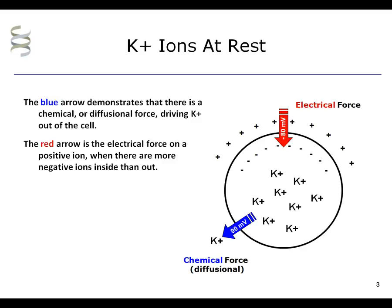When the cell membrane is at rest, the electrical potential is strongly negative. In fact, for most neurons and muscle cells, the electrical potential is about minus 80 millivolts at rest. In this diagram, the red arrow is the electrical force on a positive ion when there are more negative charges inside than out.